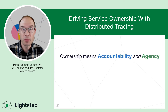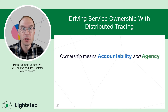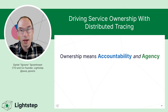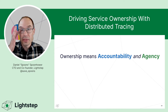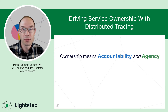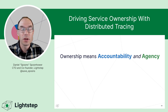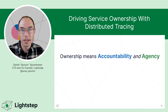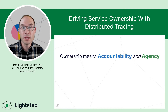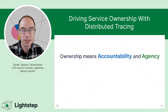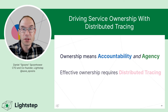I want to be super clear: I used the word accountability before, and accountability is certainly important, but I think it's really only half of ownership. The other half — and this is often forgotten — is that in addition to holding teams accountable, we also need to give them agency. That is, we need to give them the means to improve things. And a big part of that means is going to be distributed tracing.